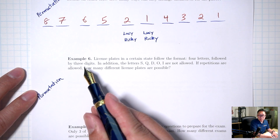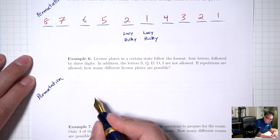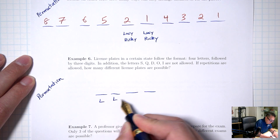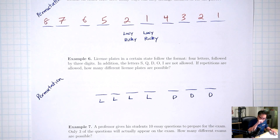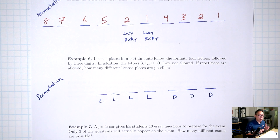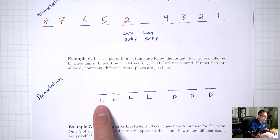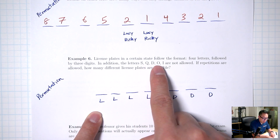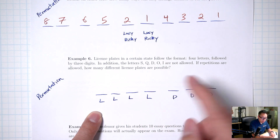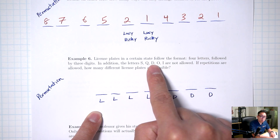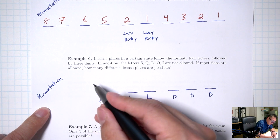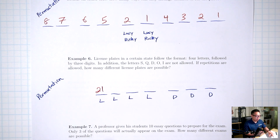Let me go back to the pizza example with 12 toppings choosing 5, and clarify one thing. What we calculated — 12 choose 5 — is for choosing exactly 5 different toppings. We're not allowing double pepperoni, double mushrooms, or all pepperoni. If you did allow repeats like that, it would be a more complicated counting problem not covered in this class.